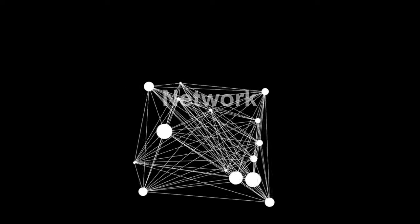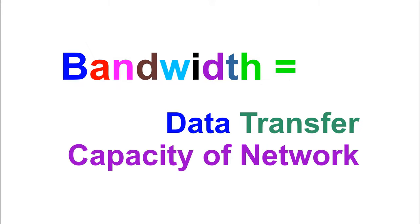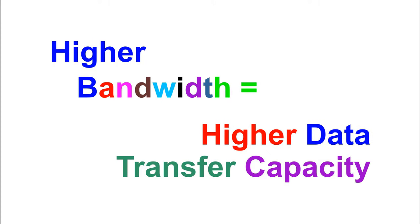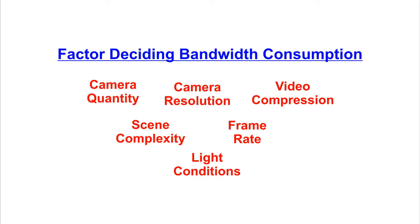Bandwidth plays an important role in IP networks. Bandwidth is the data transfer capacity of the network — if the network is designed to handle bigger bandwidths, it can transfer more data. In an IP system, data is transferred from cameras over the network. Bandwidth is consumed when the camera stream is sent to the recorder (NVR or PC server), and also when the recorder is viewed on a laptop or mobile. The higher the resolution of the camera, the more bandwidth it consumes.